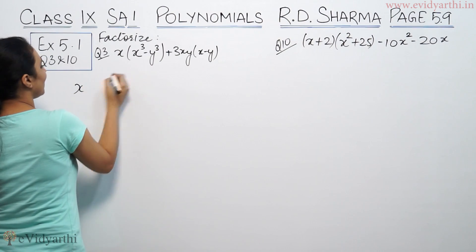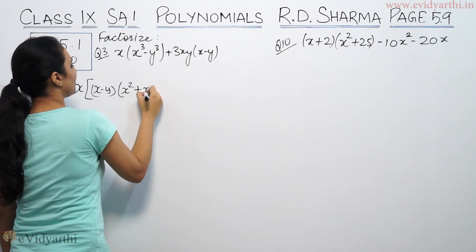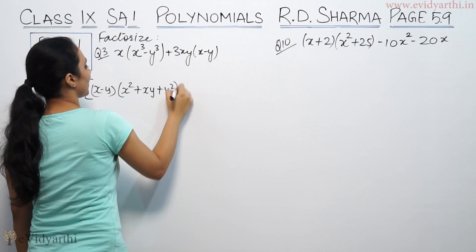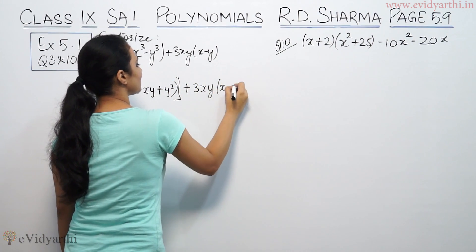So we rewrite this as (x³ - y³) = (x - y)(x² + xy + y²) + 3xy(x - y).